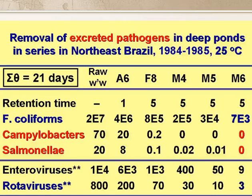The faecal coliforms were reduced from 2×10⁷ per 100 ml in the raw wastewater to 7,000 per 100 ml in the final effluent, and the Campylobacters from 70 per 100 ml to zero — at least undetectable — in the effluent of the first maturation pond. The Salmonella were reduced from 20 per 100 ml to zero, undetectable, in the effluent of the third maturation pond. I suspect the removals of Campylobacter and Salmonella were similar; it's just that we are able to detect very small numbers of Salmonella but not of Campylobacter.